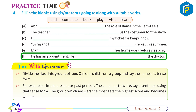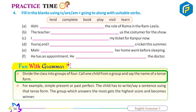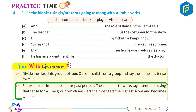F. He has an appointment. He is going to visit the doctor. Fun with Grammar: Divide the class into groups of four. Call one child from a group and say the name of a tense form, for example, simple present or past perfect. The child has to say a sentence using that tense form. The group which answers the most gets the highest score and becomes the winner.